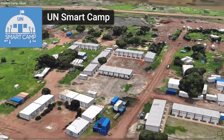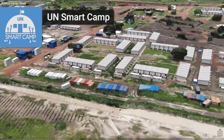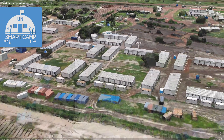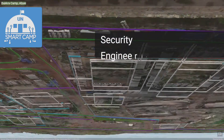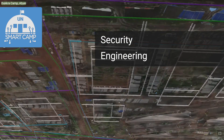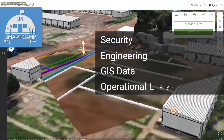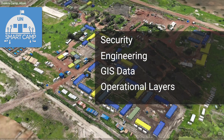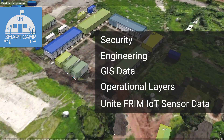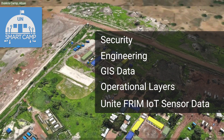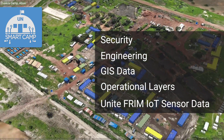Security systems, engineering installations, GIS data, operational layers, and Unite Frame IoT sensor data can all be mapped onto a Smart Camp digital twin.